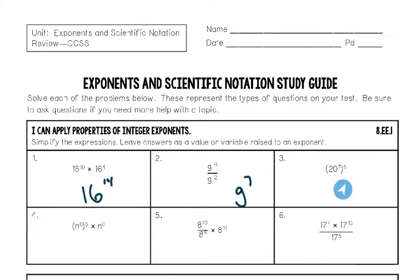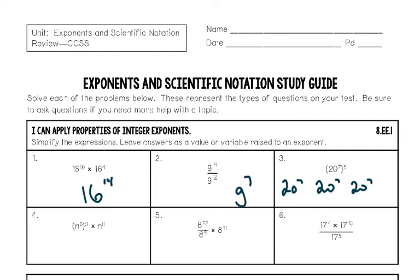Number three is an example of the power rule. You have a base of 20 to the seventh power, and that's being taken to the fifth power. This is like saying you have a 20 with an exponent of seven, five times. Since they're being multiplied, you add the exponents — but with the power rule you can multiply these exponents directly. So seven times five is thirty-five: we have 20 to the power of thirty-five.